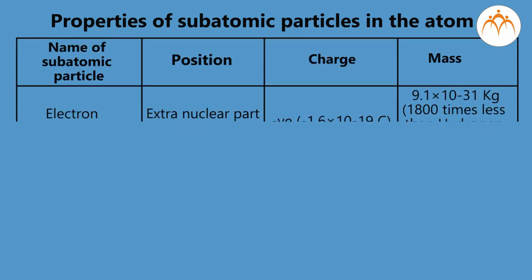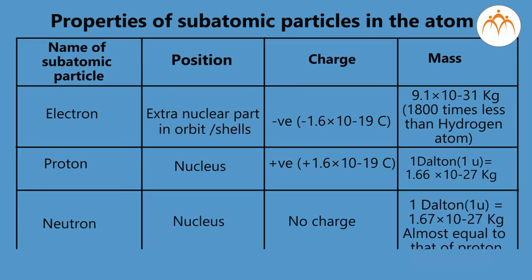Let us now study the properties of subatomic particles of the atom by preparing a table. Properties of subatomic particles in the atom: Subatomic particle electron with position as extra nuclear part in orbit or shells, where charge on electron is negative which is -1.6 × 10⁻¹⁹ coulomb, and mass of electron is 9.1 × 10⁻³¹ kg, which is 1800 times less than hydrogen atom.